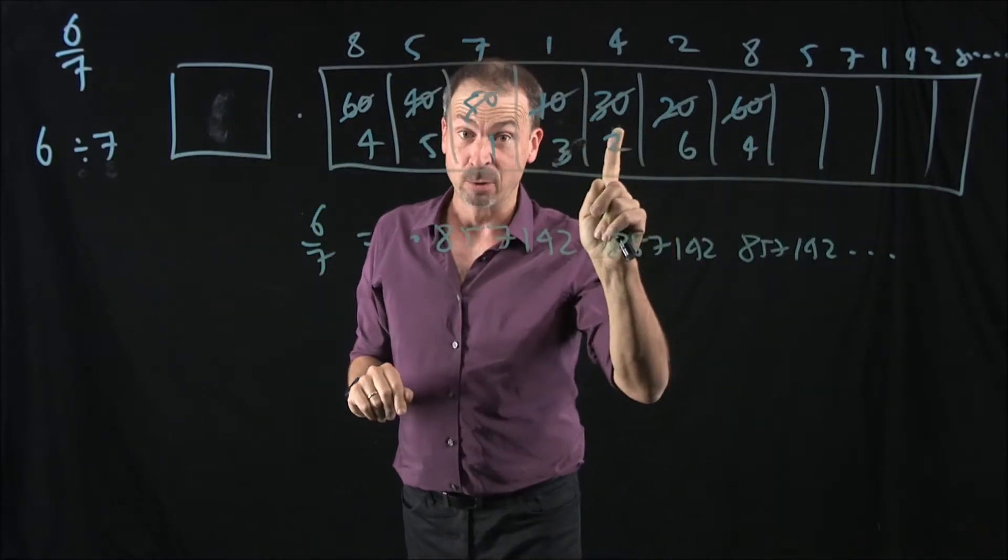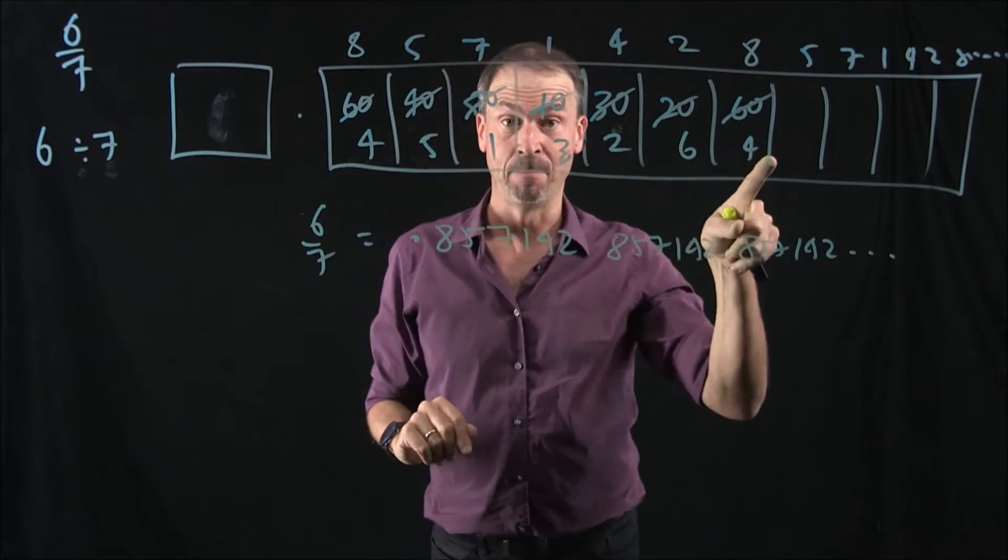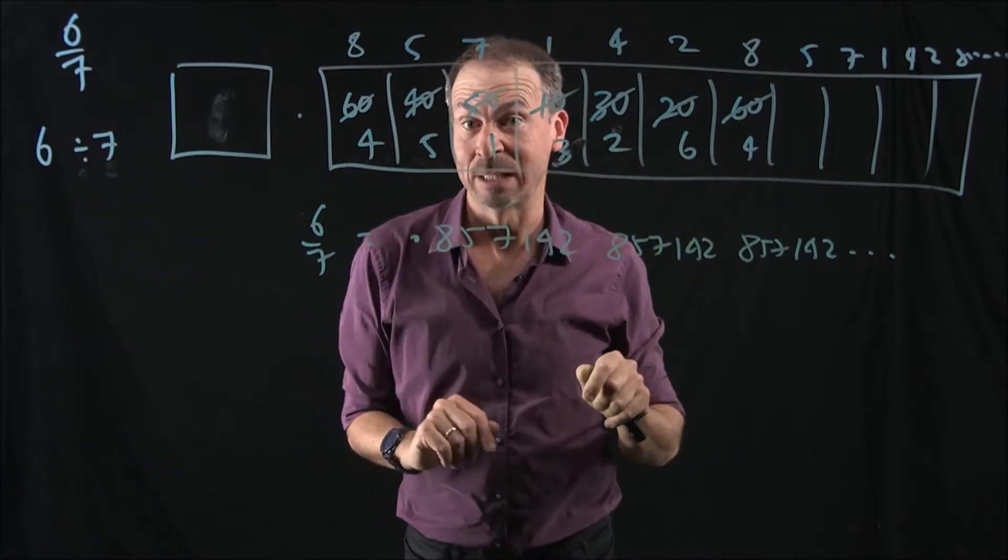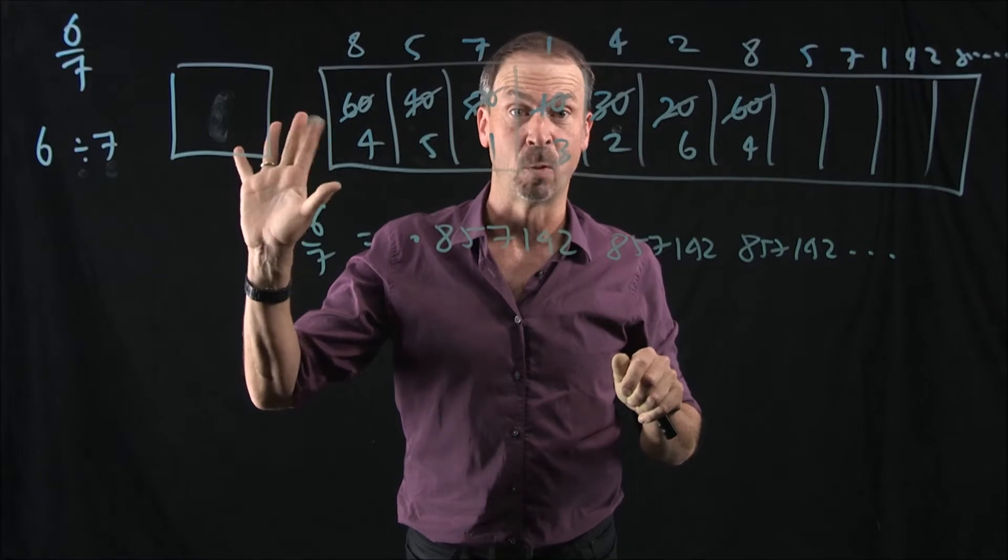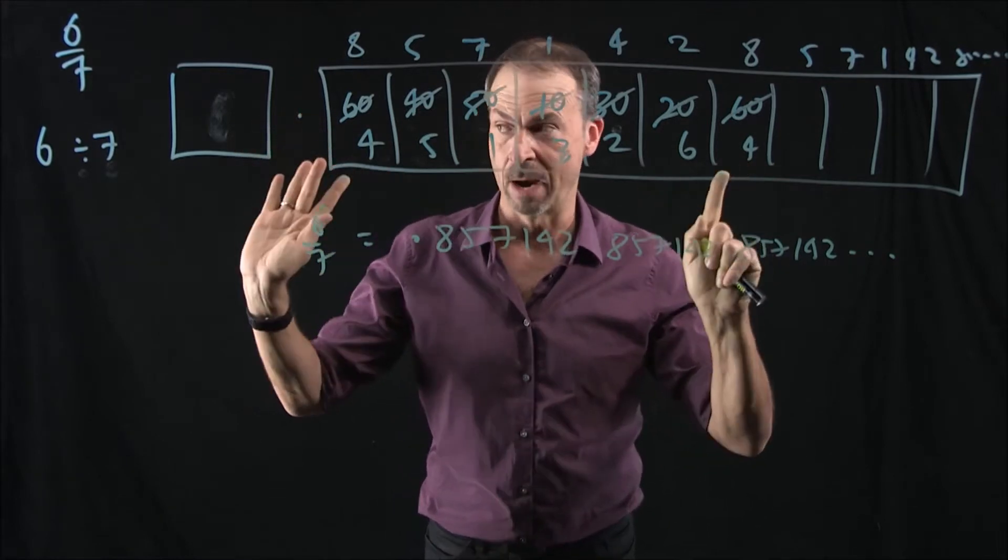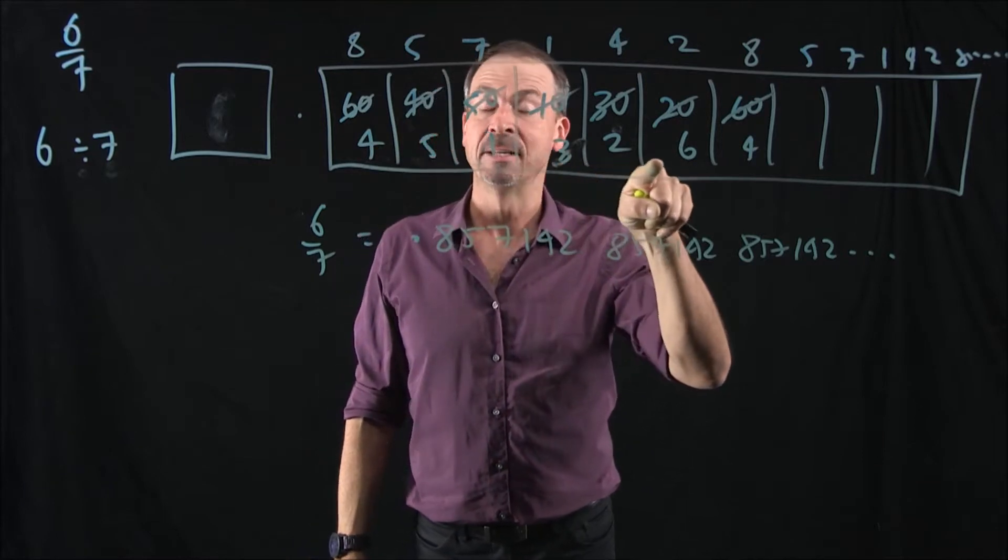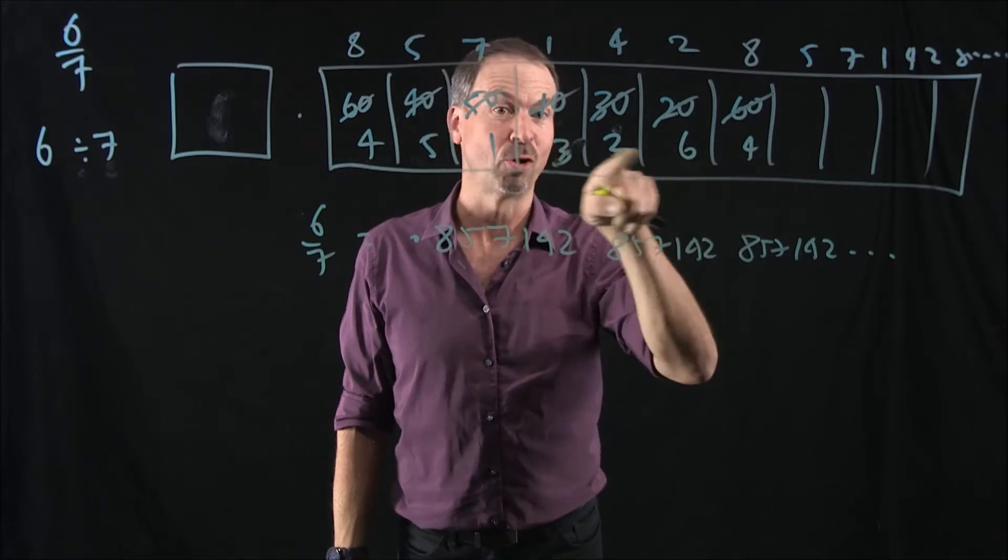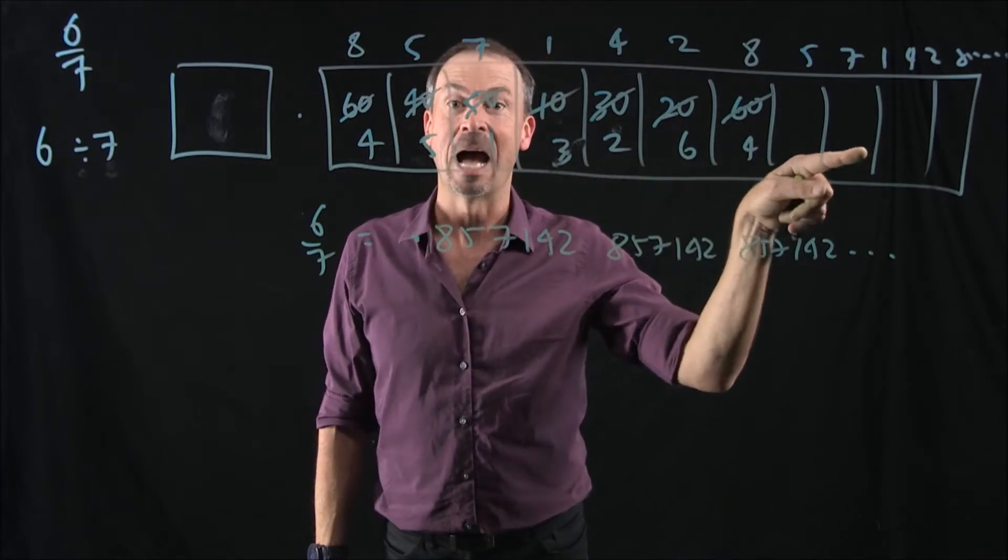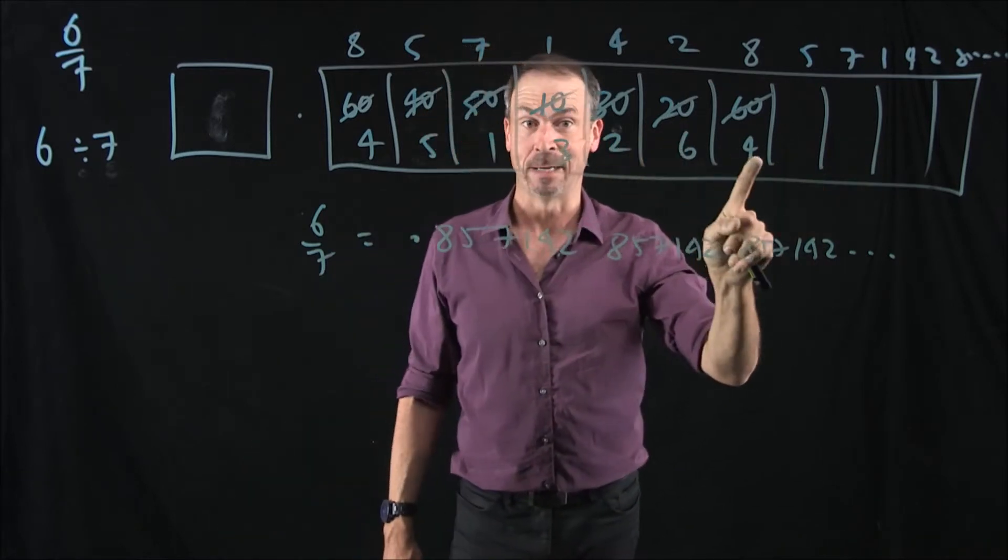I might see a remainder of zero, I didn't happen to this time, but there's only seven possible remainders I could see when dividing by seven: zero, one, two, three, four, five, and six. Grand. So that means, as I do my division process, there's only a finite number of remainders, and I'm trying to do this process for as long as I can, I must eventually repeat a remainder.